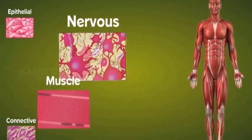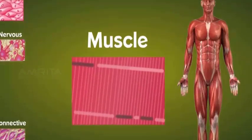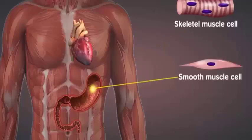The third tissue type is the muscle tissues that are responsible for the movement in our body. The three types of muscle tissues are skeletal, smooth, and cardiac.